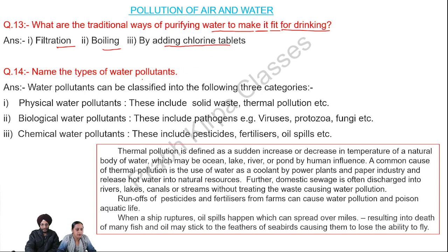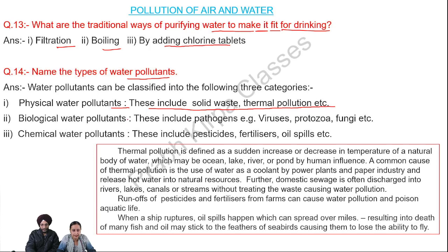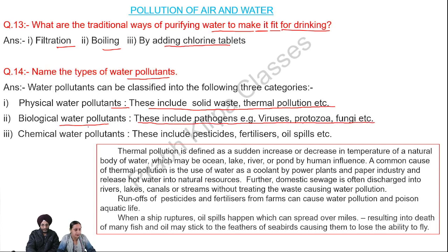Name the types of water pollutants. Water pollutants can be classified into three categories. Number 1: physical water pollutants — these include solid waste, thermal pollution, etc. Number 2: biological water pollutants — these include pathogens, for example viruses, protozoa, fungi, etc.